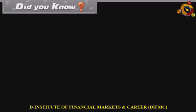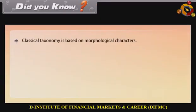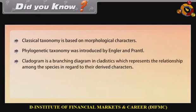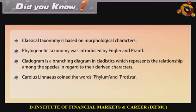Did you know? Classical taxonomy is based on morphological characters. Phylogenetic taxonomy was introduced by Engler and Prantl. A cladogram is a branching diagram in cladistics which represents the relationship among species with regard to their derived characters. Carolus Linnaeus coined the words phylum and Protista.